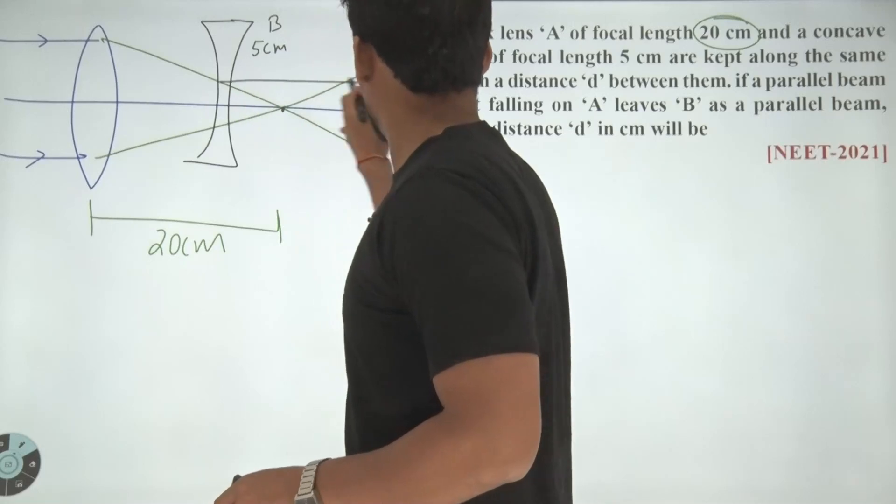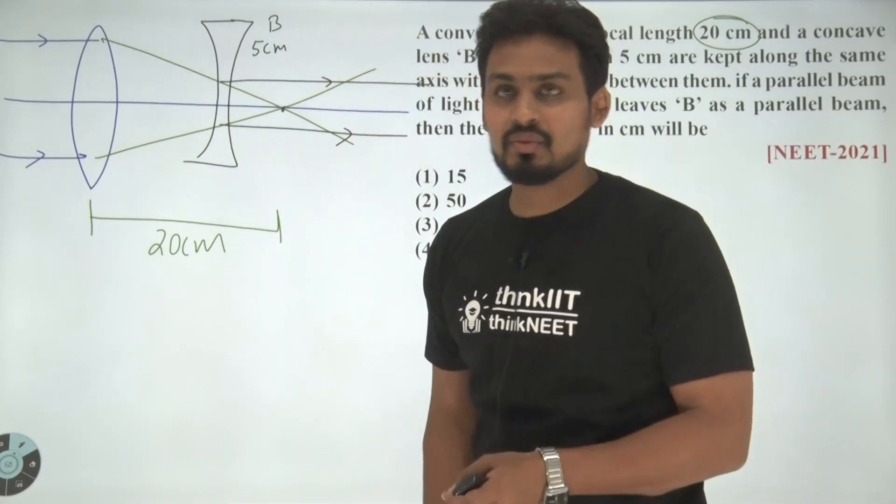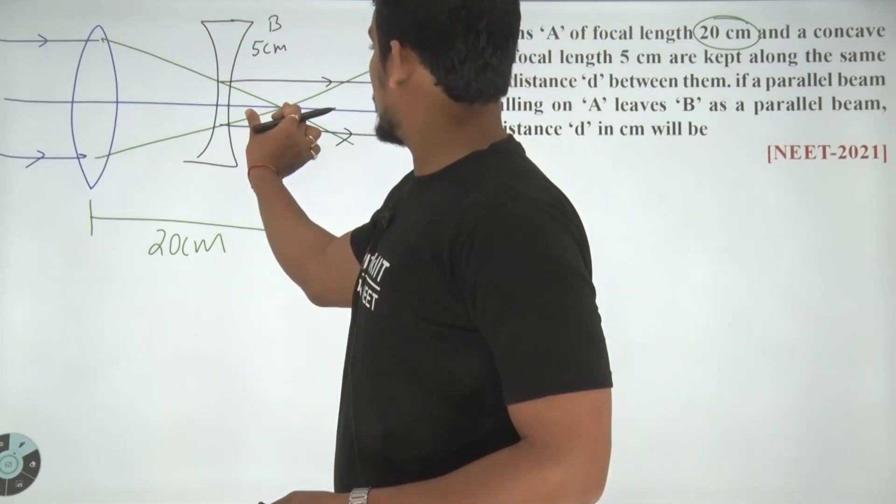If this point is the focus of this concave lens, these rays would be parallel, right? And if that is so, this distance is 5 centimeter.